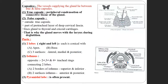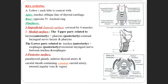The pyramidal lobe is a small structure present at the isthmus. It is a developmental anomaly — if present, there is no problem; if absent, also no problem. It is just a minor abnormality and nothing to worry about.